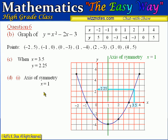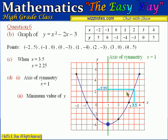Next, part D asks us to estimate the minimum value of the function. The minimum value of y is the lowest y value on the graph, which occurs at the vertex of the parabola. The graph comes down to negative 4 at the turning point, so the minimum value of y is negative 4.